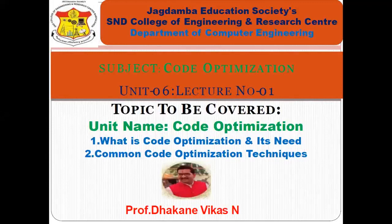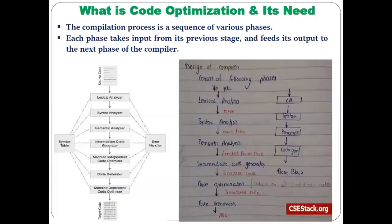Hello and welcome. Today we are starting with Unit 6 of compiler design. We have already completed units one, two, and three, but instead of starting with unit four or five, we are starting with unit six. According to the phases of compiler, we discussed unit one as lexical analysis, unit two as syntax analysis, unit three as semantic analysis and intermediate code generation. Today we will discuss unit six: code optimization, its need, and some important techniques.